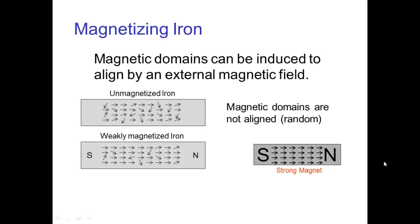Well, if we bring a strong magnet close to that piece of iron that was unmagnetized, some of the internal domains start to become aligned with that strong magnet nearby. And then that piece of iron becomes weakly magnetized.